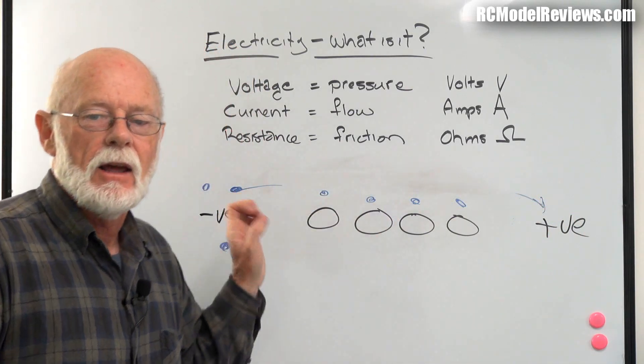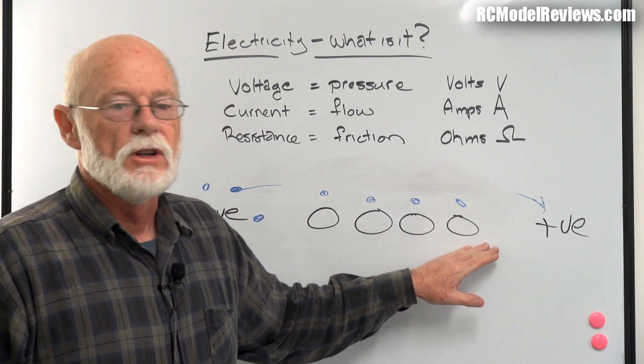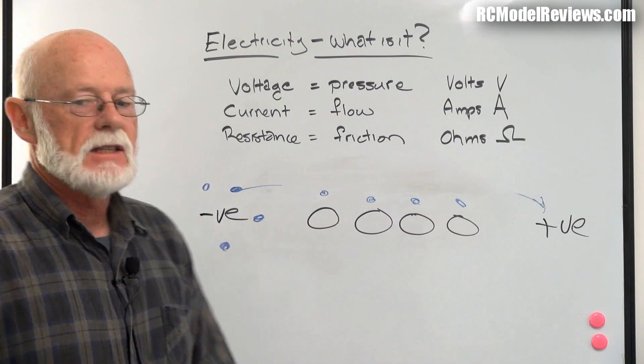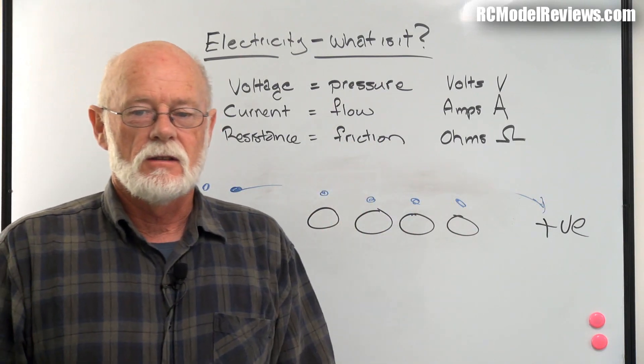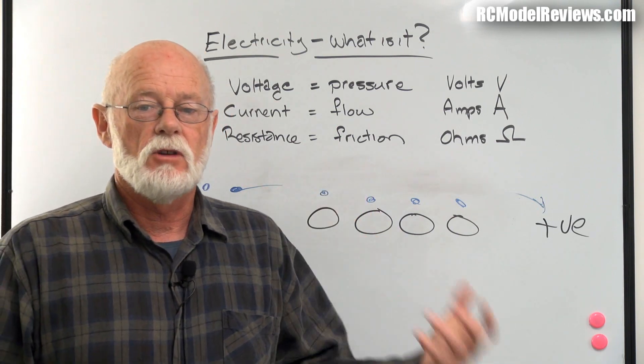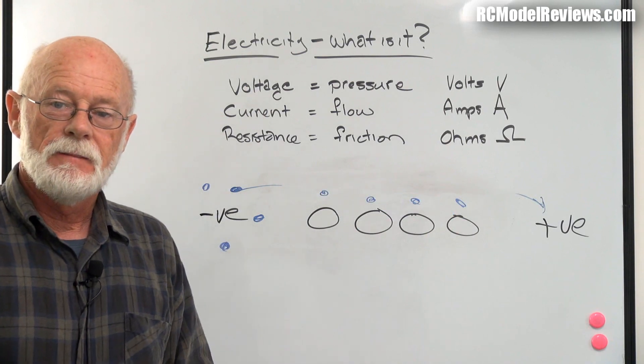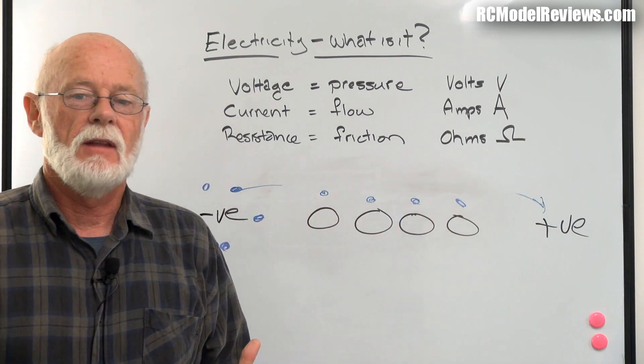Conductors are the exact opposite - they allow the easy flow of electrons. An insulator has very high resistance to the flow of electricity; a conductor has low resistance. In a later video I'll be talking about semiconductors, which have very low resistance to electricity but only in one direction. You can push the ping pong balls out that way but you can't push them back this way.